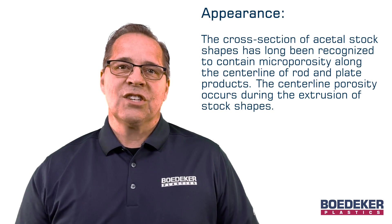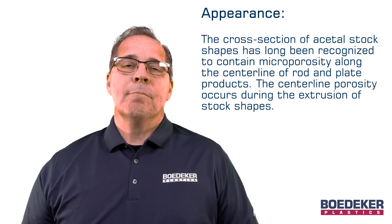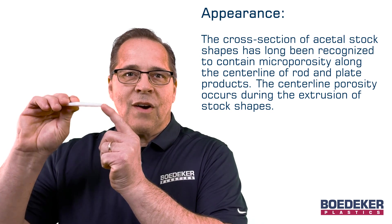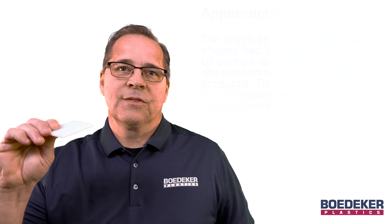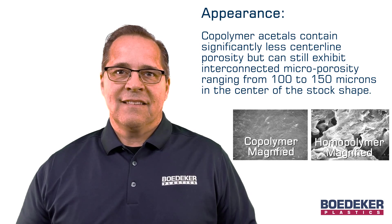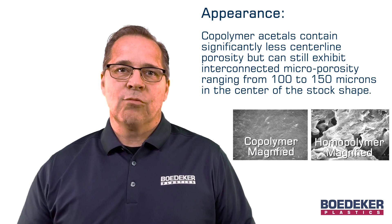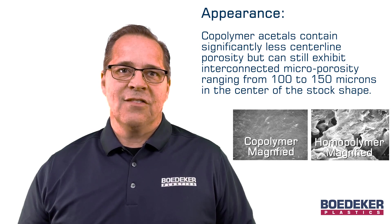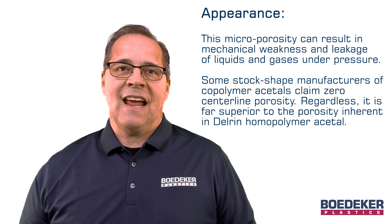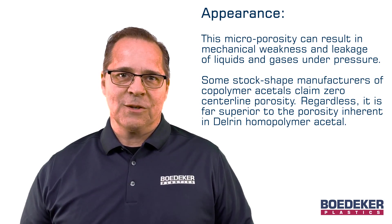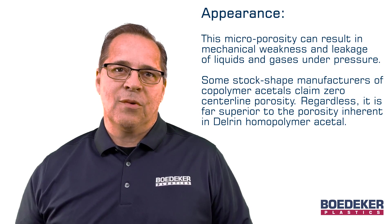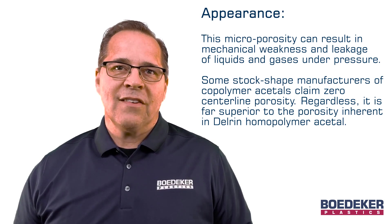The cross section of acetyl stock shapes has long been recognized to contain micro porosity along the centerline of rod and plate products. This centerline porosity occurs during the extrusion of the stock shapes. Copolymer acetyls contain significantly less centerline porosity but can still exhibit some interconnected micro porosity ranging from 100 to 150 microns in the center of the stock shape. This micro porosity can result in mechanical weakness and leakage of liquids and gases under pressure.